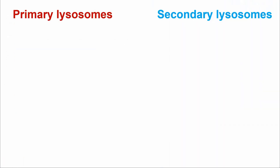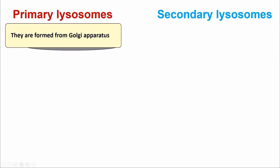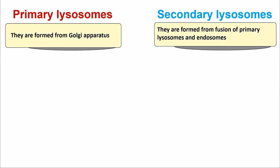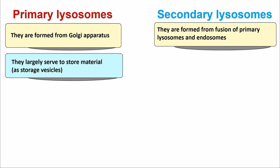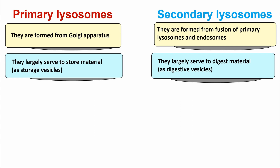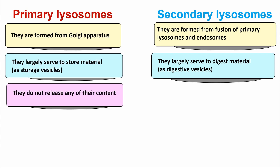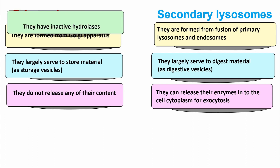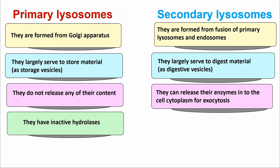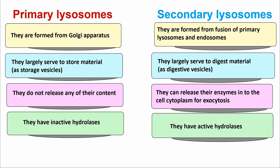Comparing primary and secondary lysosomes: Primary lysosomes are formed from the Golgi apparatus, but secondary lysosomes are formed from the fusion of primary lysosomes and endosomes. Primary lysosomes largely serve to store material as storage vesicles, but secondary lysosomes largely serve to digest material as digestive vesicles. Primary lysosomes do not release any of their content, but secondary lysosomes can release their enzymes into the cell cytoplasm via exocytosis. Primary lysosomes have inactive hydrolases, but secondary lysosomes have active hydrolases.